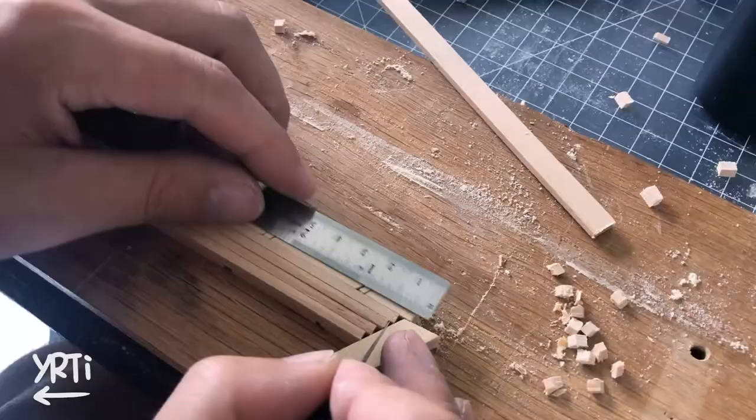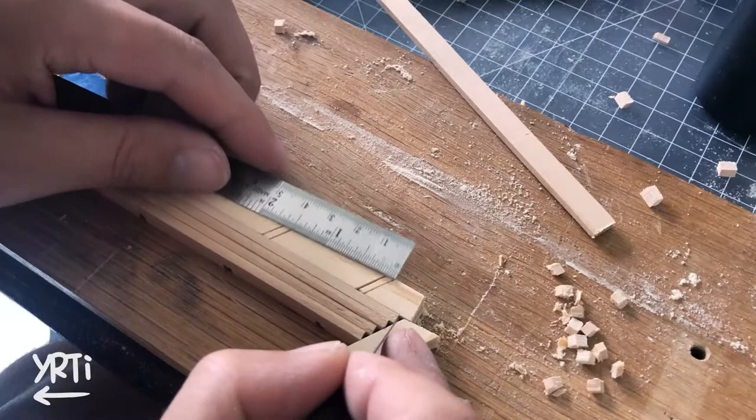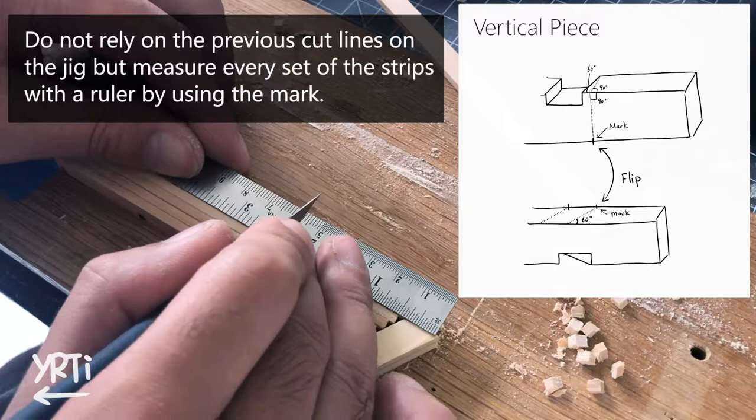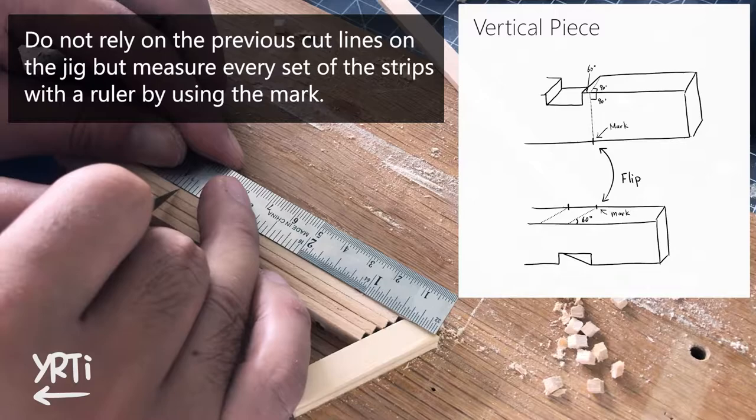Once you are done with it, now do the flip side of the vertical pieces. Remember, I put the mark for the first cutout line so I can measure everything from there. Just to double check, I still measure from one end, just like I did for the other side. Then I did the same process of the measuring and cutting to finish the vertical pieces.